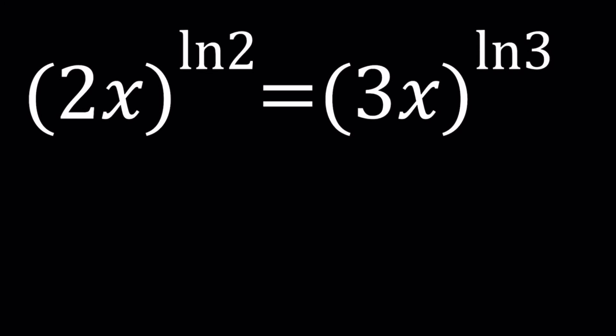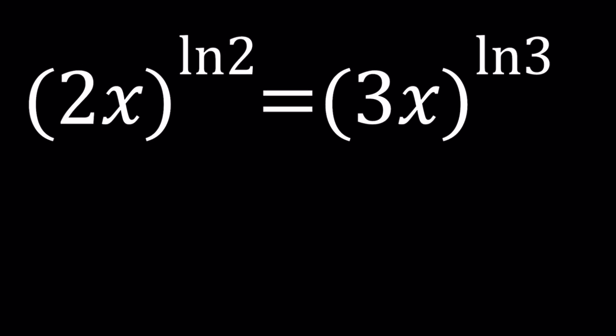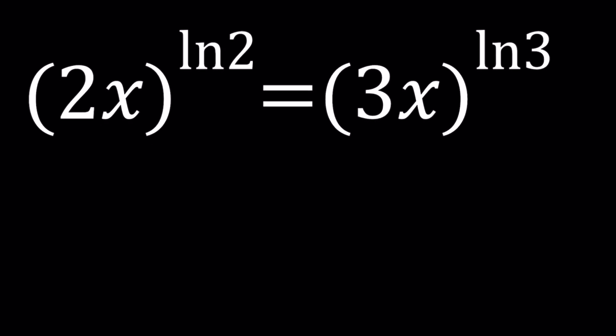Hello everyone. In this video we're going to be solving a nice exponential equation with natural logs. We have 2x to the power ln2 equals 3x to the power ln3, and we're going to be solving for x values. I'm going to show you the solution method, how to find x, and also show you the result from Wolfram Alpha. And at the end we're going to be looking at a graph. Let's get started.